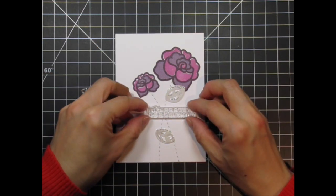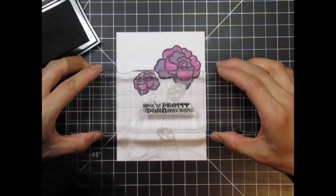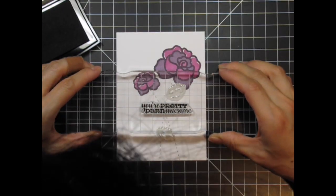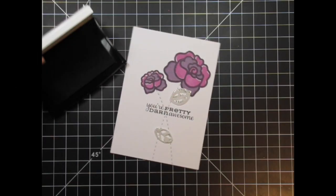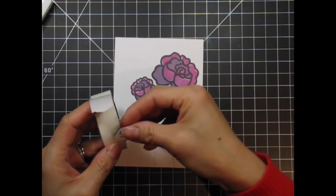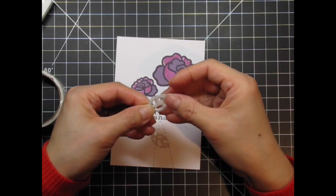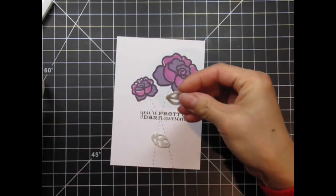When I decide on the position of the sentiment, I stamp it in VersaFine Onyx Black Pigment ink. I assemble the leaves by adhering the vellum to the glimmer cardstock with micro glue dots, and then the leaves themselves to the panel. The vellum layer is slightly staggered off center from the glimmer.